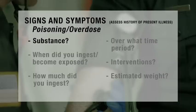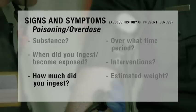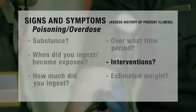Under the poisoning overdose category: what was the substance, when did you ingest or become exposed, how much did the patient ingest, over what time period, interventions, and an estimated weight.